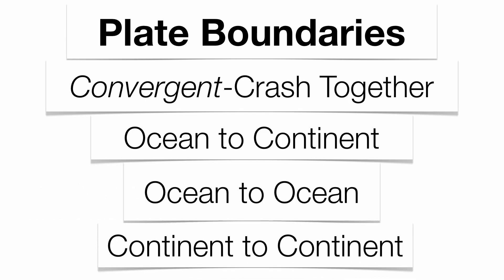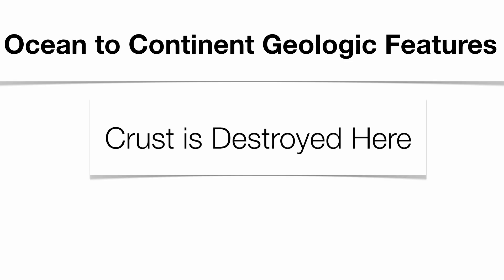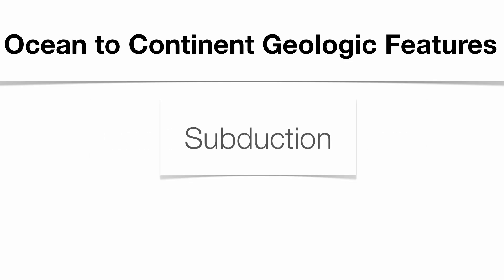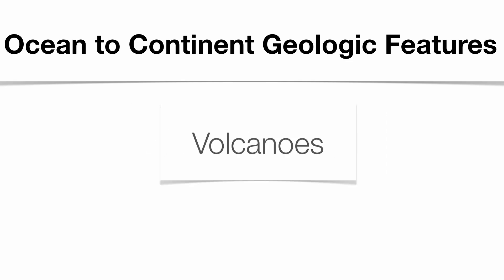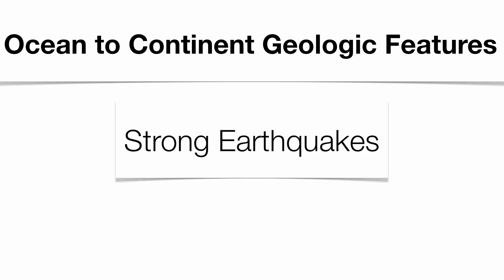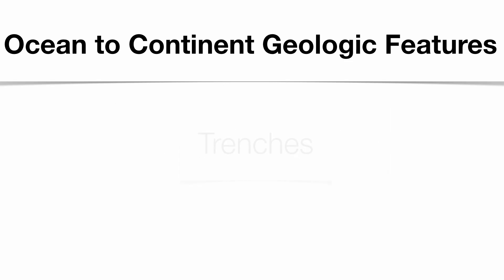Let's take a look at some of the geologic features, starting with ocean to continent. Your crust is destroyed here — some of the plates are going to be destroyed at convergent plate boundaries, specifically ocean to continent. They're going to be destroyed through a process called subduction. You also get mountain ranges at these types of plate boundaries, some of those mountains are volcanic, you tend to get very strong earthquakes, and you tend to get offshore trenches.